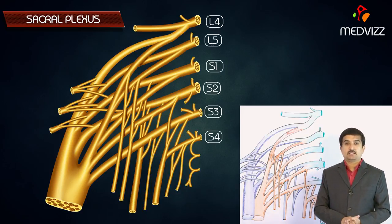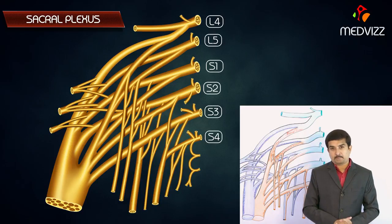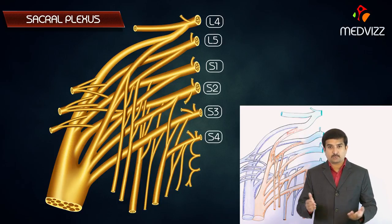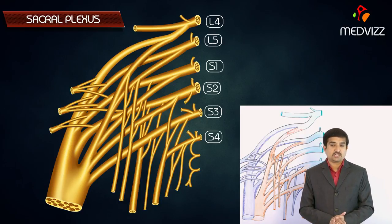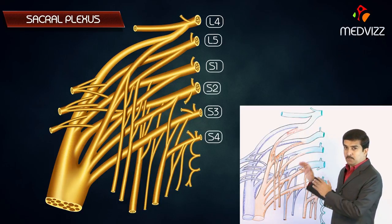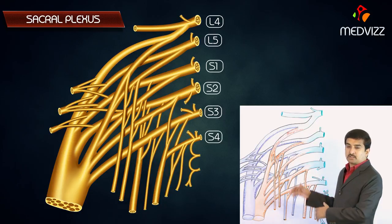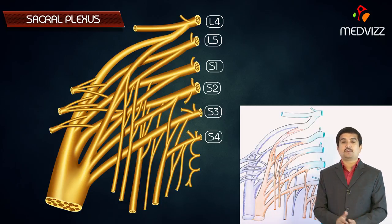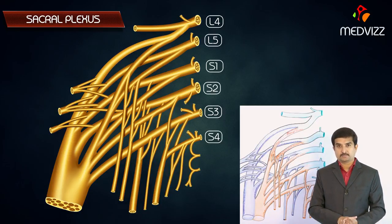This completes the discussion of the sacral plexus, including the gross anatomy and individual branches emerging from it.